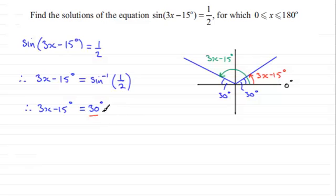The next one, the green solution is going to be 180 degrees minus this 30 degrees. So in other words, it's going to be 150 degrees. So that corresponds with the green solution here.